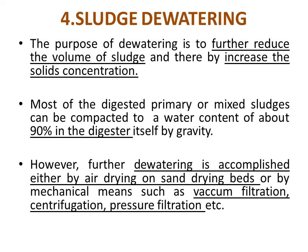The fourth process is sludge de-watering. The purpose of de-watering is to reduce the volume of sludge and increase the solid concentration. Sludge normally contains 95 to 98 percent moisture. We must remove that water content to reduce volume and easily dispose of the sludge. Most digested primary or mixed sludge can be compacted to a water content above 90% within the digester itself by gravity.